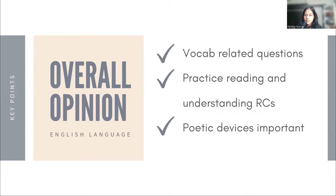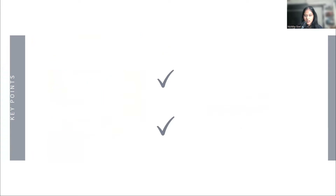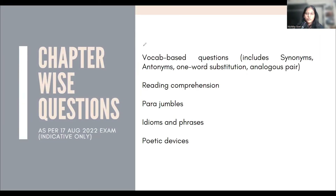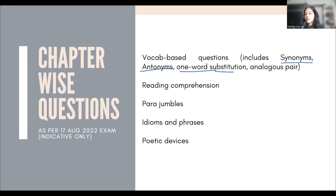Moving on to the more detailed analysis of the paper. Under vocab-based questions, I have included synonyms, antonyms-related questions, one-word substitutions, and analogies. Analogies had a lot of questions, but they were all simple — attach/detach, retreat/advance. These are basic word pairs. Analogies like horse/jockey, car/driver — such questions. I don't think there should be any problem with those.